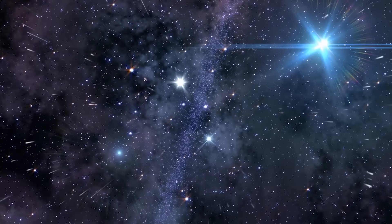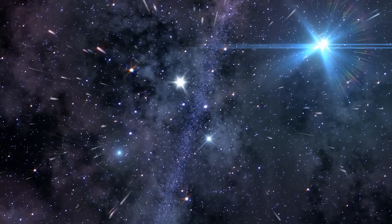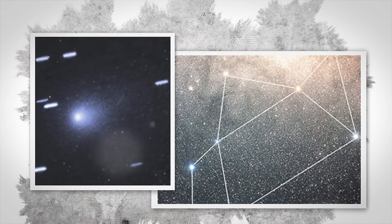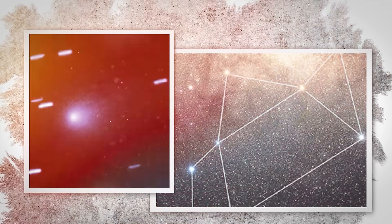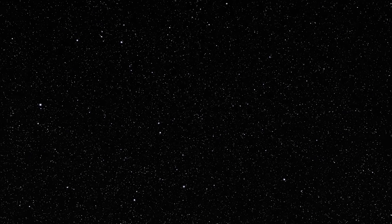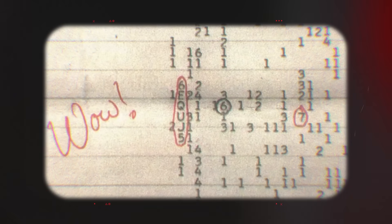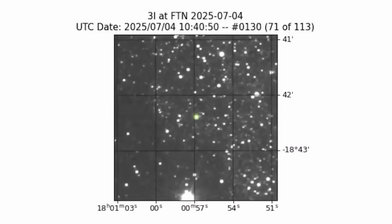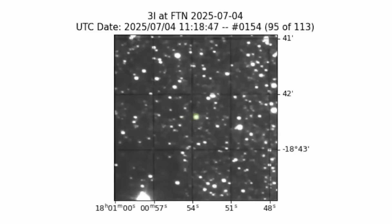When Loeb plotted the inbound trajectory of 3i/ATLAS and compared it with the region of sky where the wow signal originated, he was stunned. The two directions were nearly identical, less than nine degrees apart. The odds that two completely unrelated cosmic phenomena would emerge from the same tiny patch of sky by coincidence? Just six-tenths of one percent. If that connection is real, it changes everything. The wow signal might not have come from a distant stationary source at all. It could have come from an approaching traveler, this traveler. A probe that once called home and then went silent. If 3i/ATLAS is indeed the source, it means we're not looking at debris or even a passive relic. We're looking at something that once transmitted, something that can send a message.